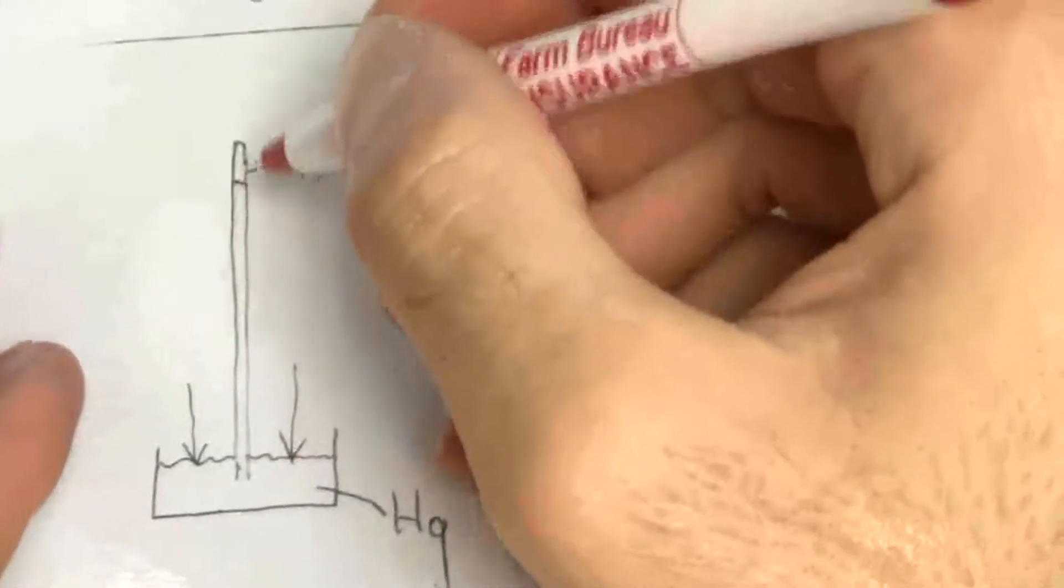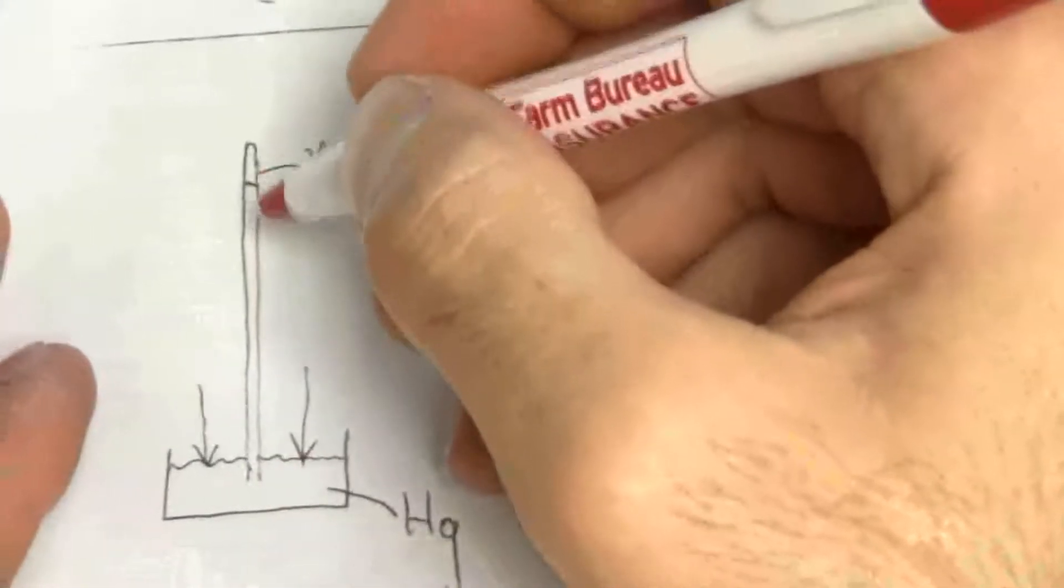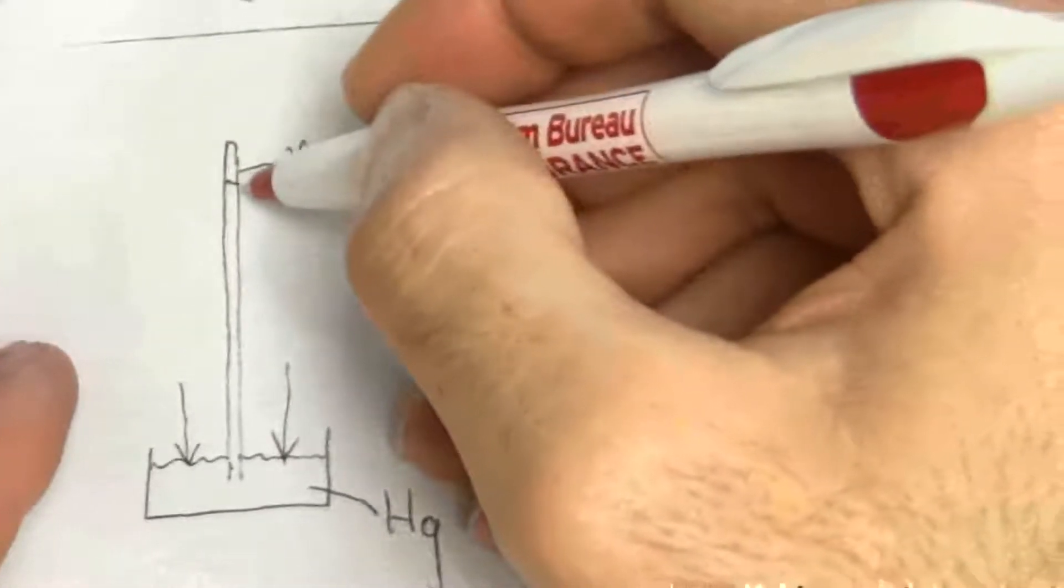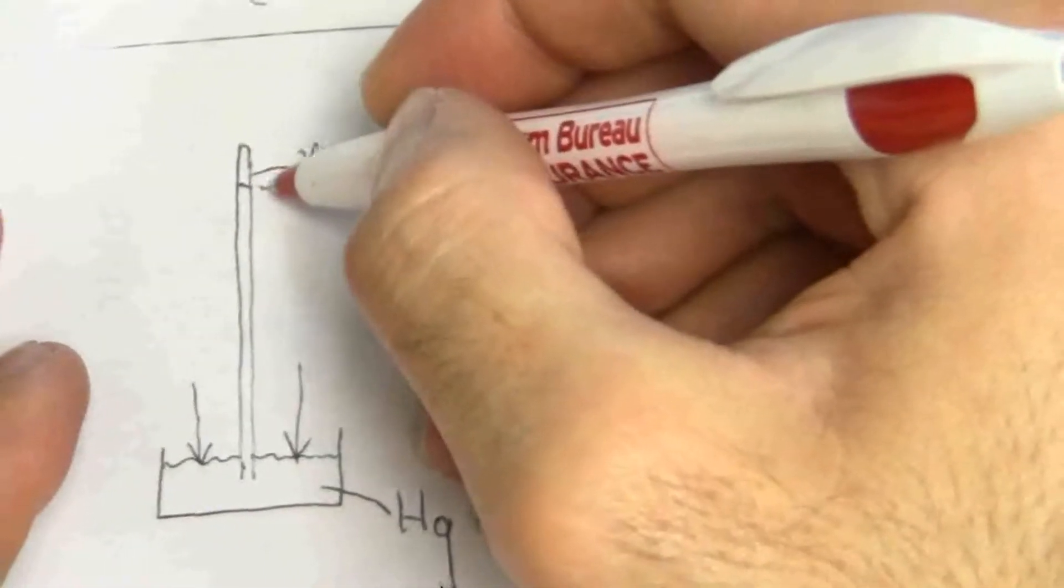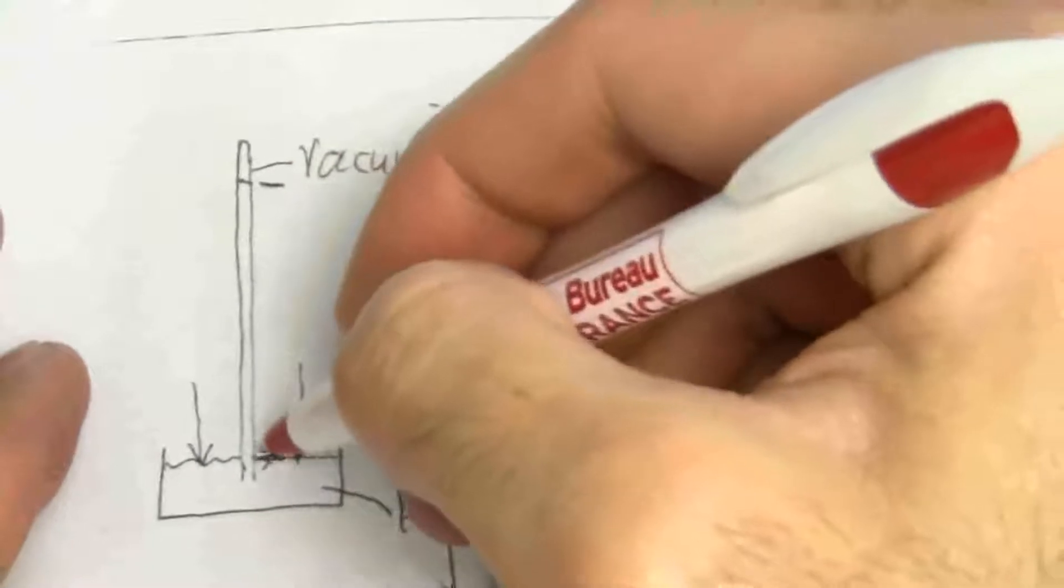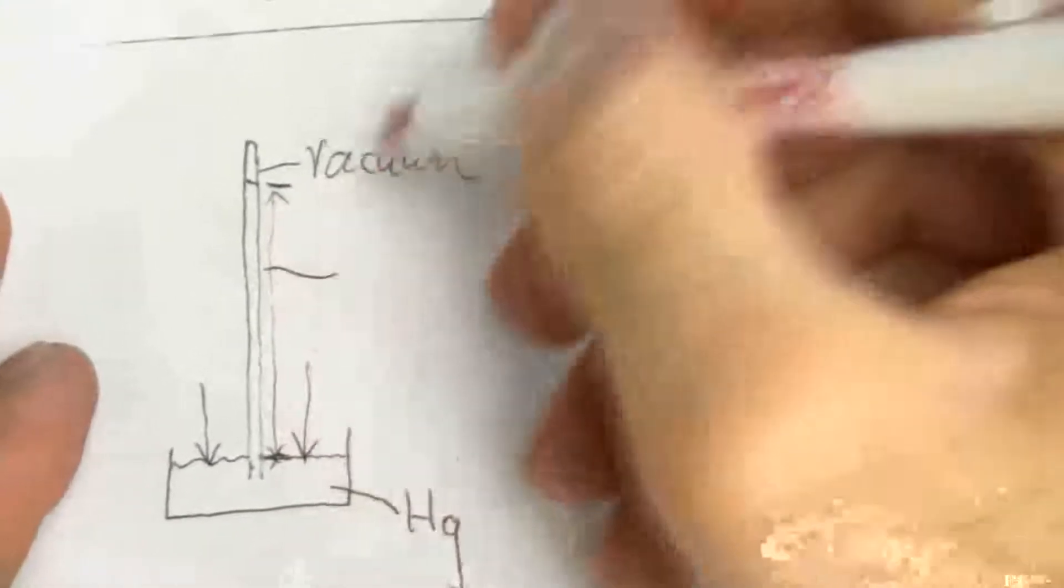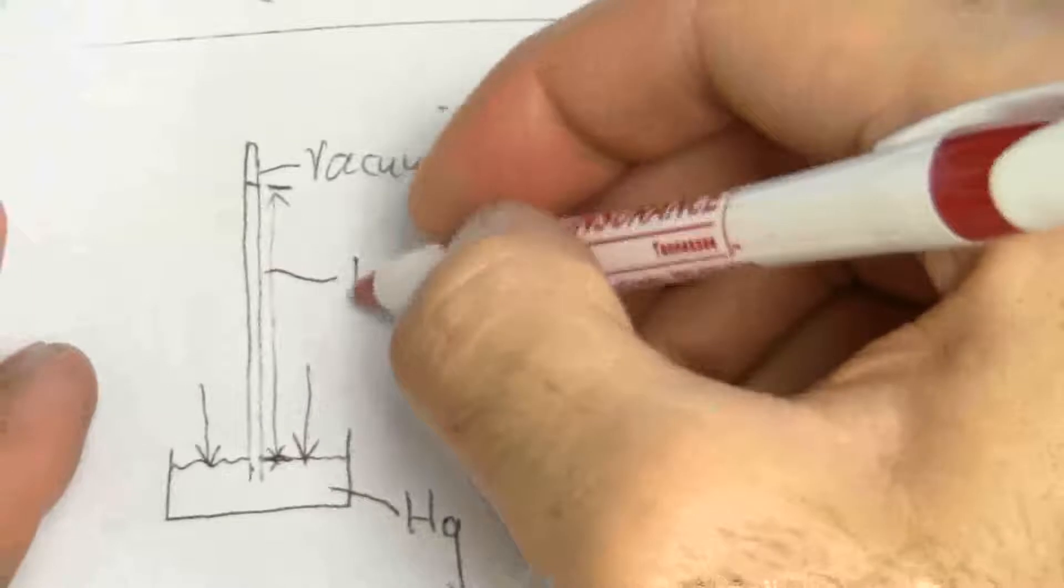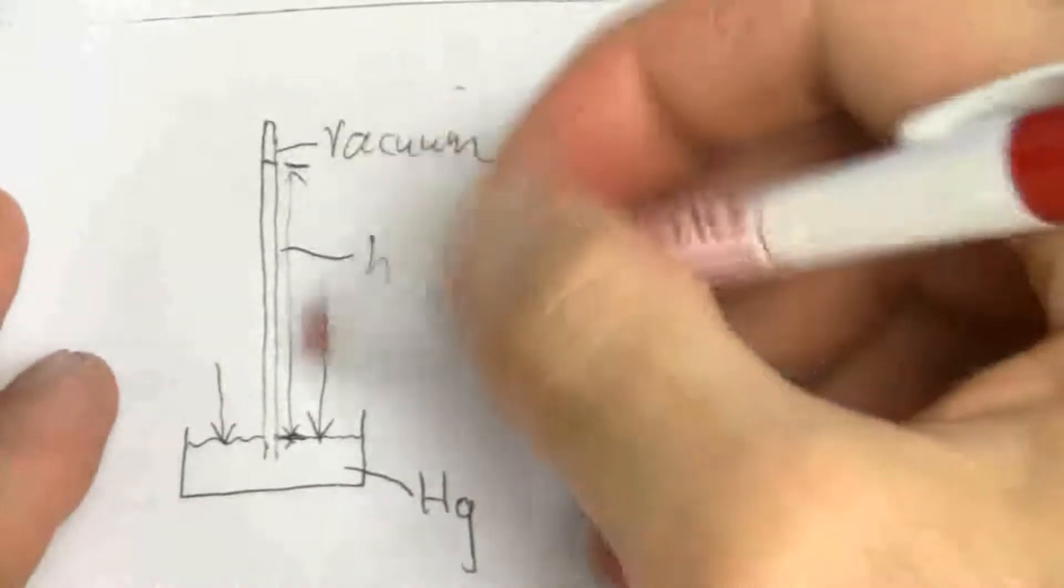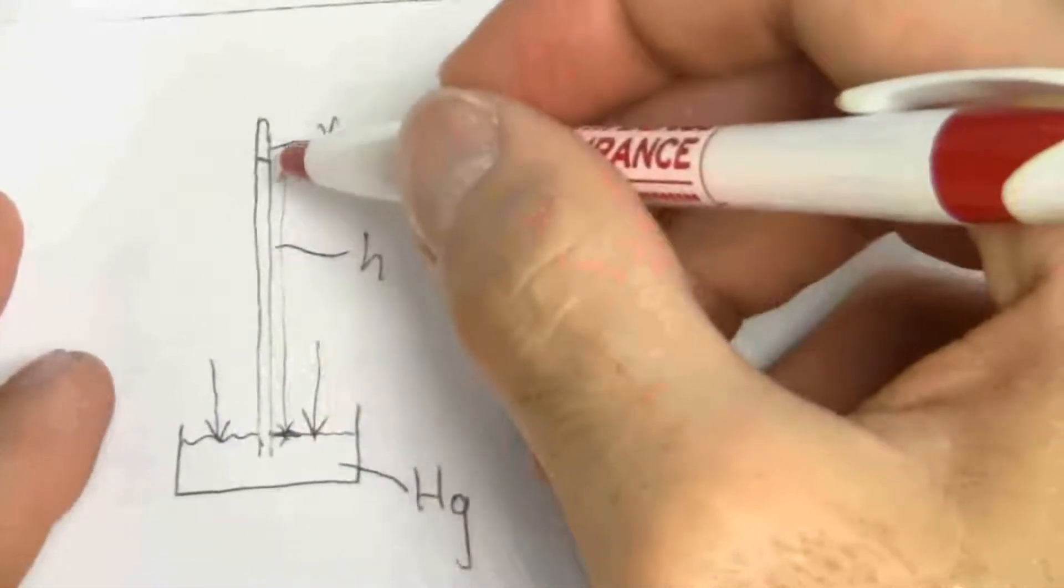So you have a column, that mercury, the weight of mercury, we have this height. That is our height of mercury, that column of mercury.